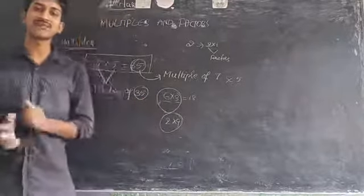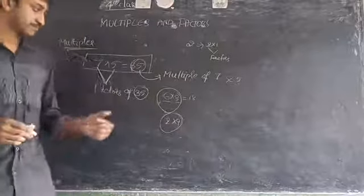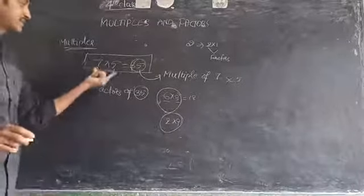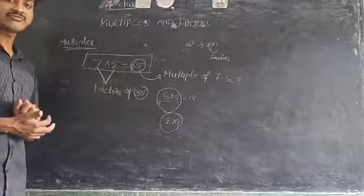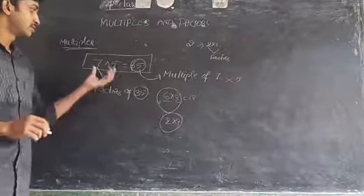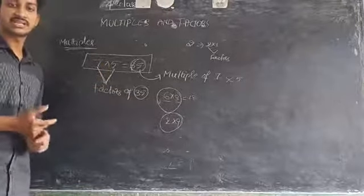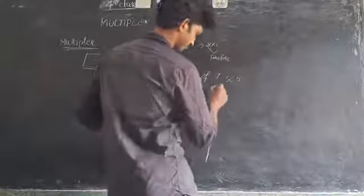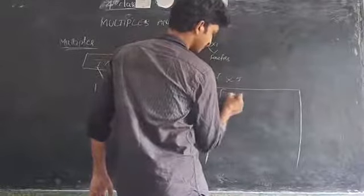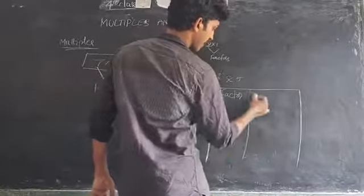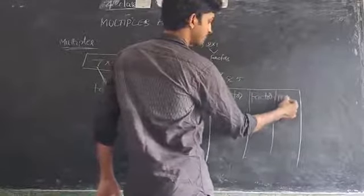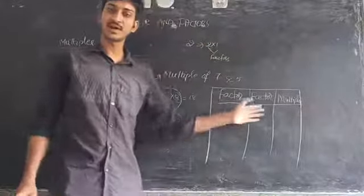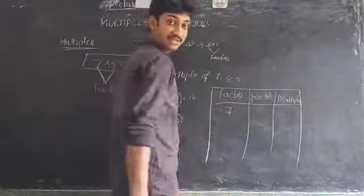A number can have several factors — for example, 6 into 3, or 2 into 9. Multiplication means repeated addition. The product of two factors is called a multiple. So one factor is 7, another factor is 5, and the multiple formed is 35.